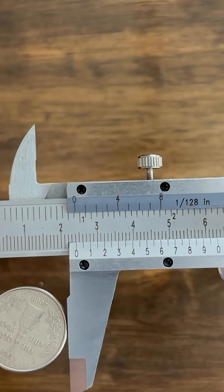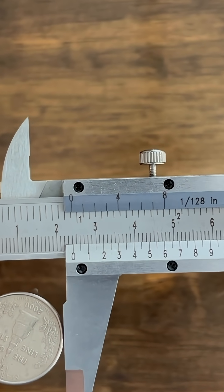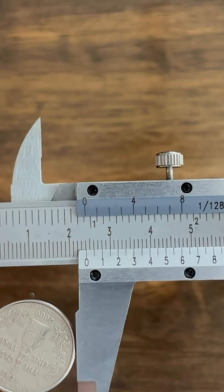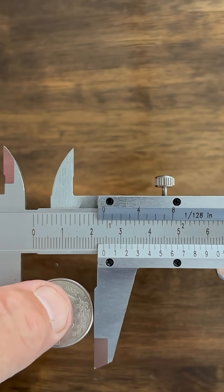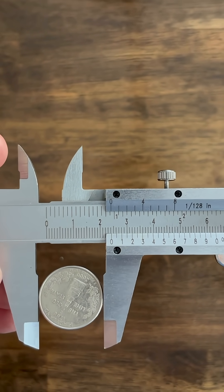So our measurement is going to be anywhere from 24.2 to 24.3 millimeters. And I know the book tells me that the diameter of this quarter is 24.3, so it's pretty close.